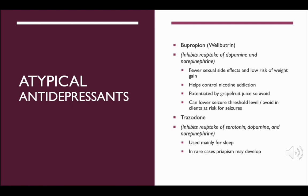The two atypical antidepressants — bupropion (Wellbutrin) and trazodone — can both be taken with SSRIs with very little concern for serotonin syndrome. Bupropion has fewer sexual side effects and low risk of weight gain; it also helps control nicotine addiction as well as treating depression. It can increase anxiety in some people, you have to avoid grape juice, and it can lower seizure threshold levels — so avoid this medication in clients at risk for seizures or electrolyte imbalance. Trazodone is used mostly for sleep. One important side effect to note is that in rare cases priapism — prolonged erection of the penis — may occur, which is considered a medical emergency requiring immediate treatment.